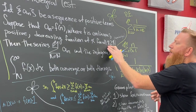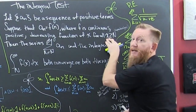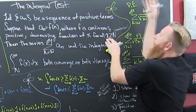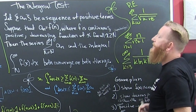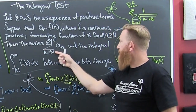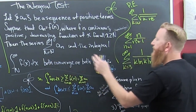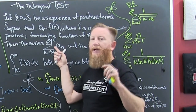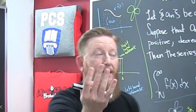We also need the function to be decreasing — we'll talk about that in a moment. These conditions need to hold in the tail of the series, because we're trying to bridge the gap between the series and the integral. If those conditions hold in the tail, then the series and the integral either both converge or both diverge.